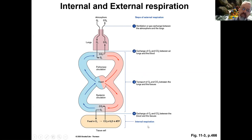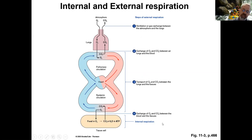Once oxygen is in the tissues, it is converted into CO2. CO2 builds up and moves back to the heart. This process occurring within the tissues is known as internal respiration — the conversion from food and oxygen to CO2.